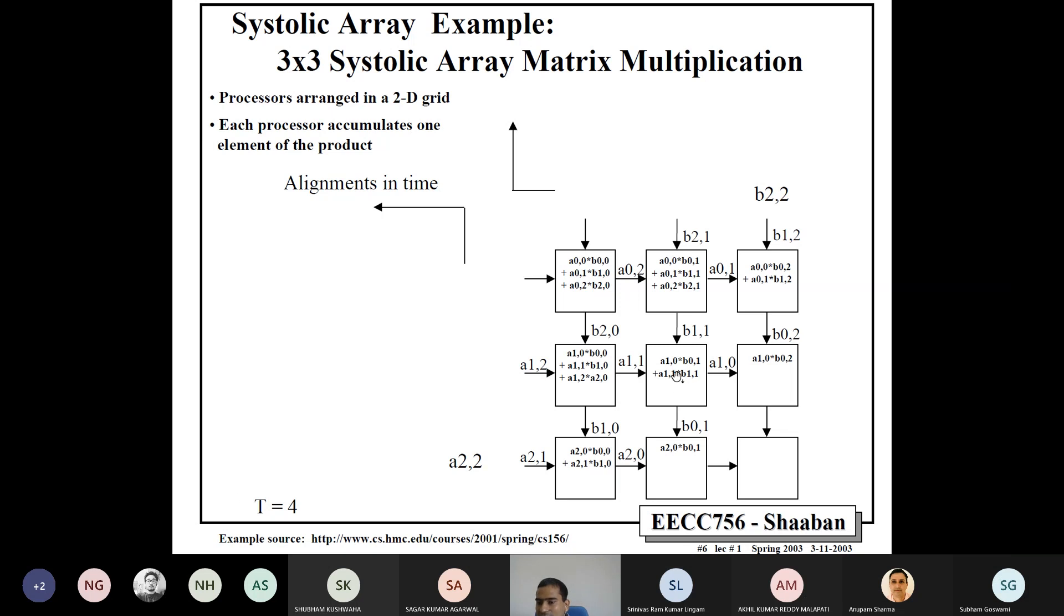Now, at T equals to 4, all of them further move one step. And one more thing we see that now, this PE has completed its computation. It only needed to do three multiplications, all of which it has done in cycle number 1, 2, and 3. So, here you can see in cycle number 3, it has done its last computation. That's all. Now, it is done.